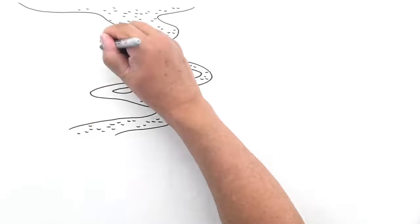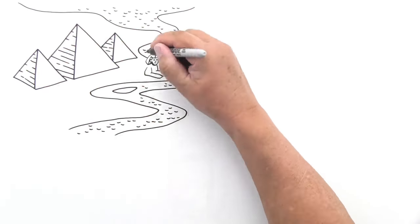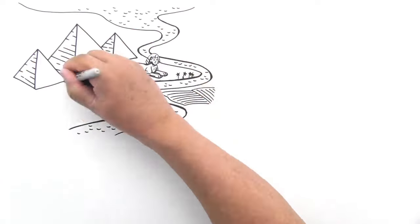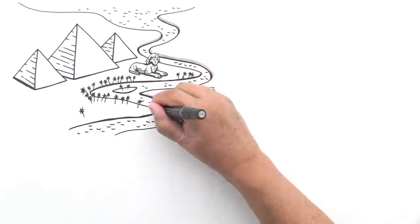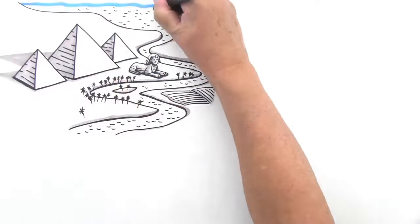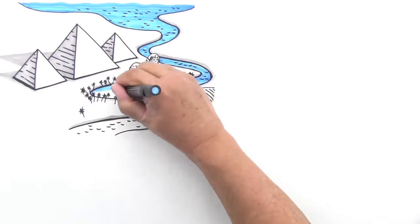Mesopotamia may have started the civilization craze, but Egypt took it to a new standard. Egypt depended on one great river, the Nile, and developed a civilization that lasted over 3,000 years.